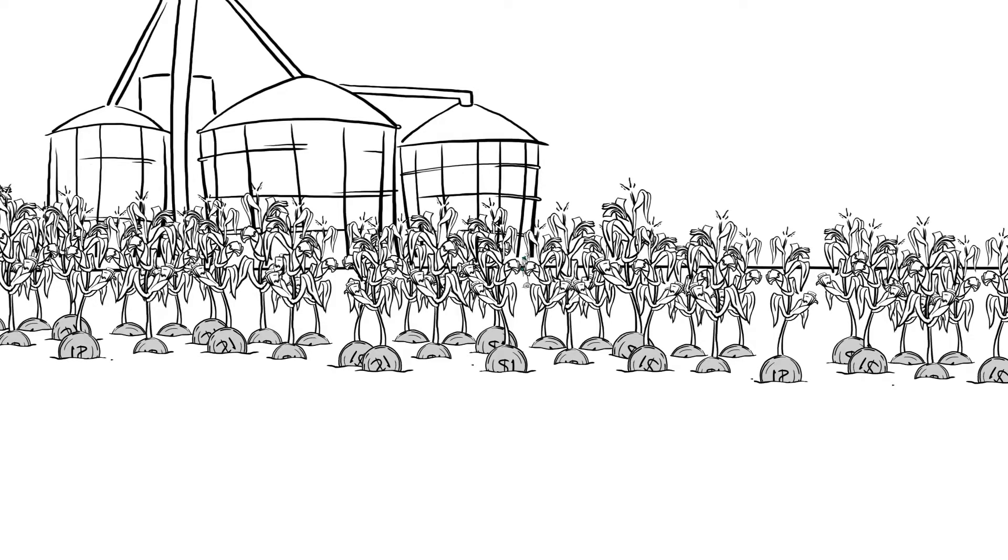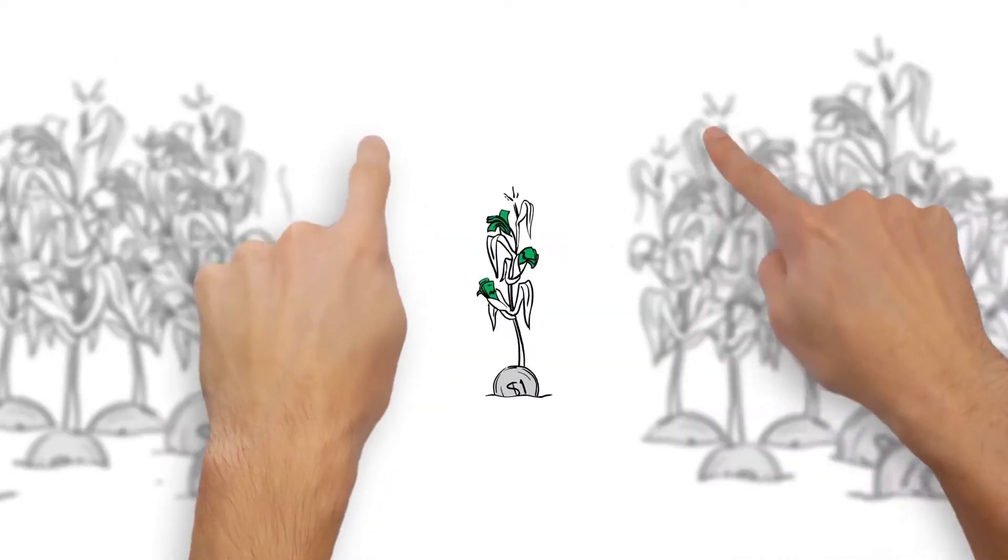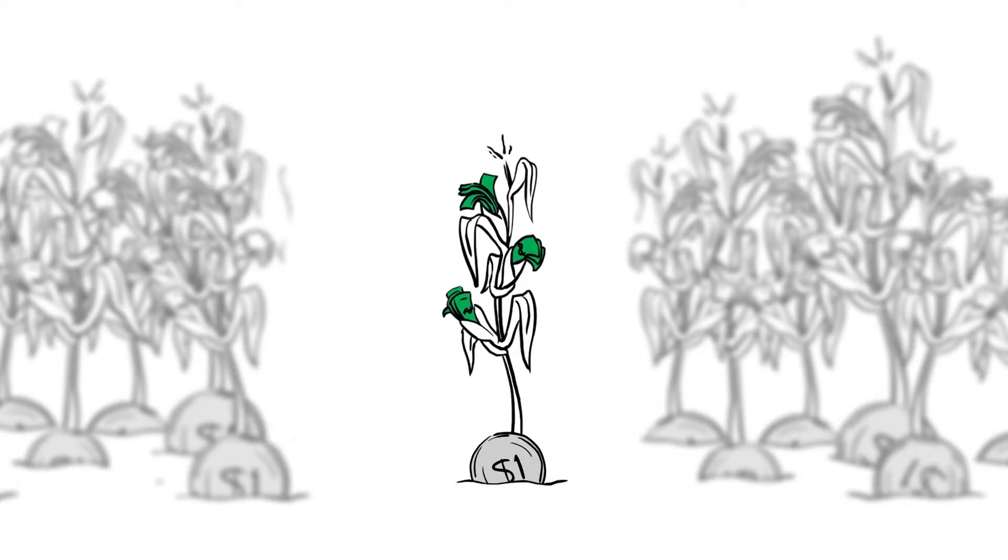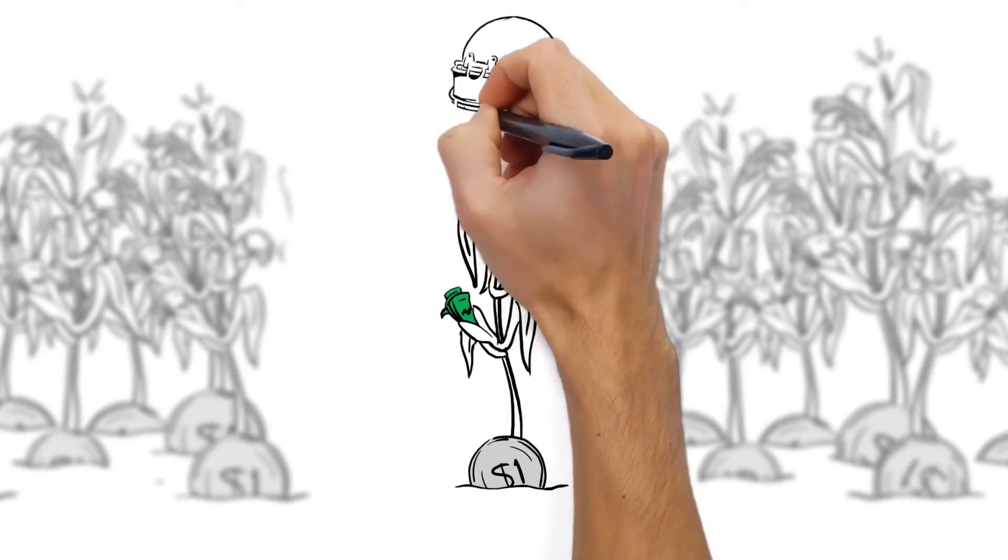When plants are stressed, several things happen that can decrease yield, but plants have built-in defense mechanisms to help them cope with stress.